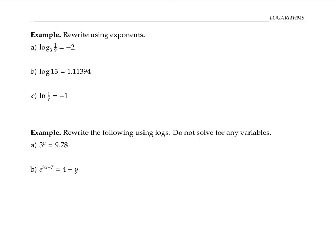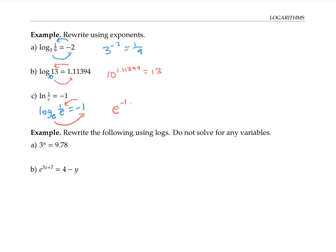Let's practice rewriting expressions with logs in them. Log base three of one ninth is negative two can be rewritten as three to the negative two equals one ninth. Log of 13 is shorthand for log base 10 of 13, so that can be rewritten as 10 to the 1.11394 equals 13. Finally, in this last expression, ln means natural log or log base e, so we can rewrite this as log base e of one over e equals negative one, which means e to the negative one equals one over e — which is true.